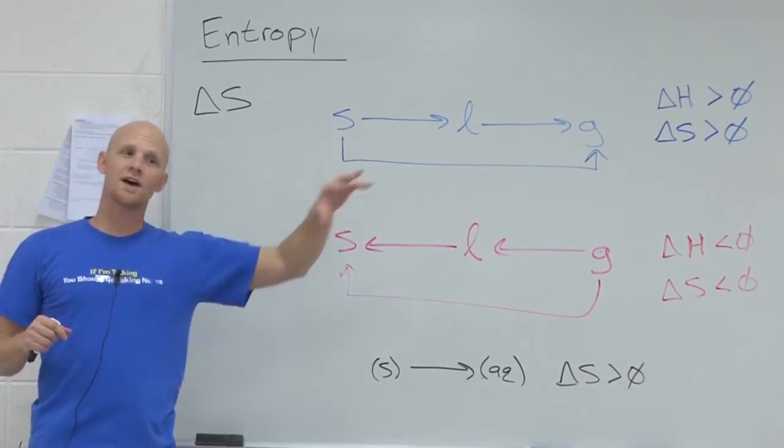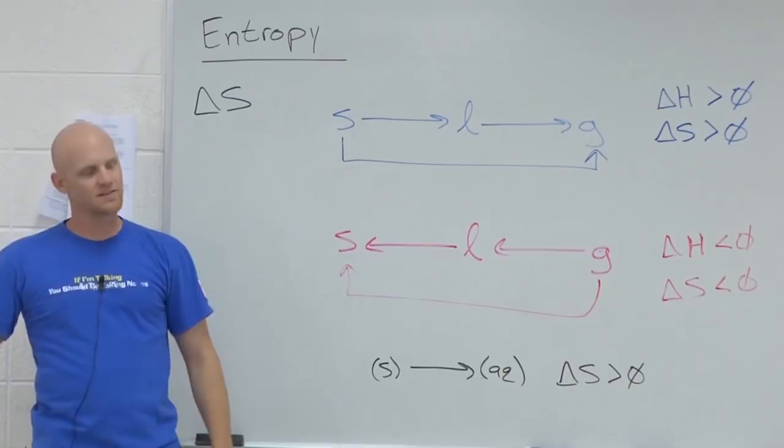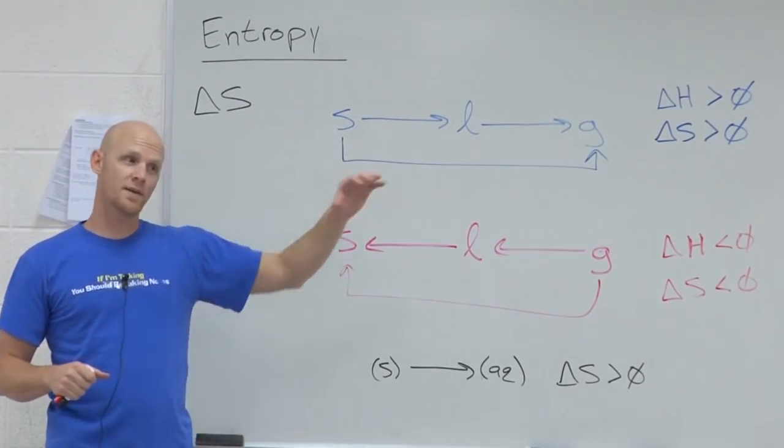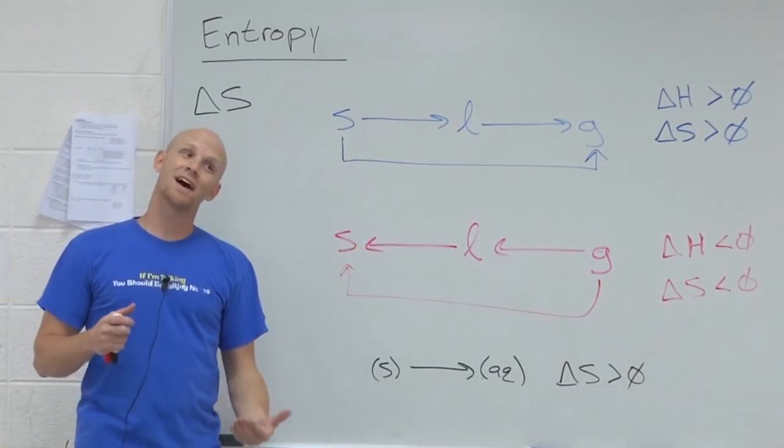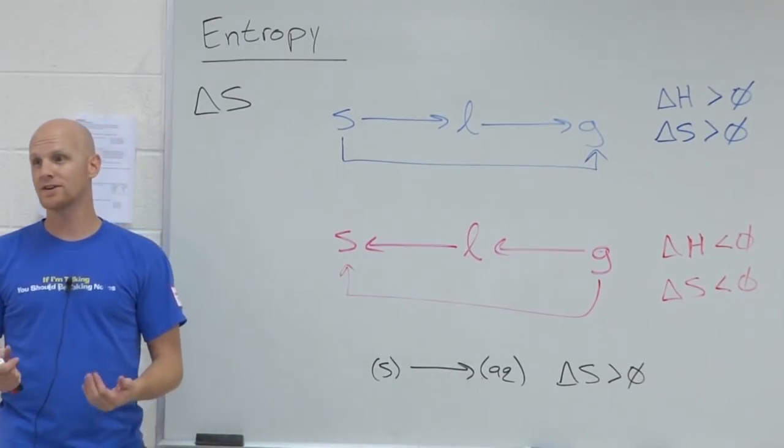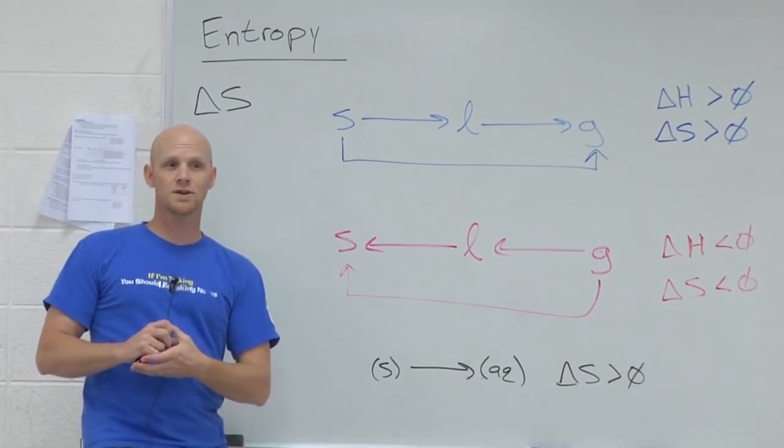If there's more moles of gas on the product side than the reactant side, that's an increase in entropy. But if there's less moles of gas on the product side than on the reactant side, that's going to be a decrease overall in entropy. That's the first thing you usually look for.